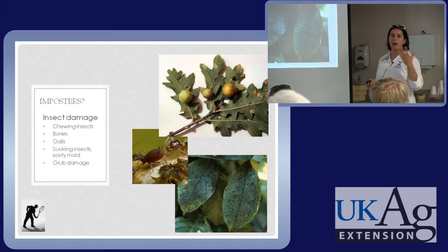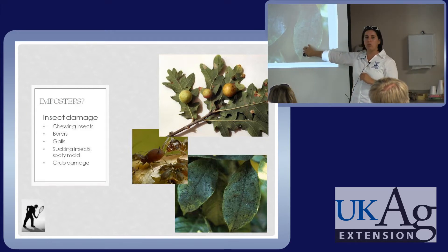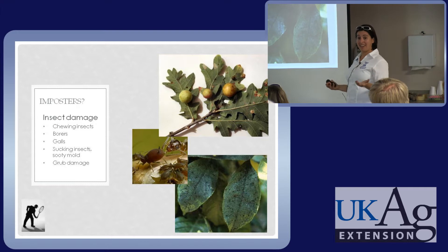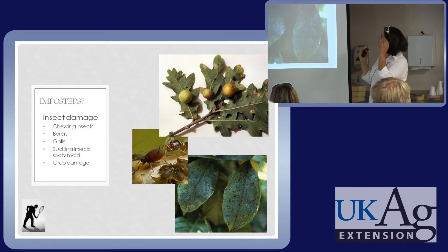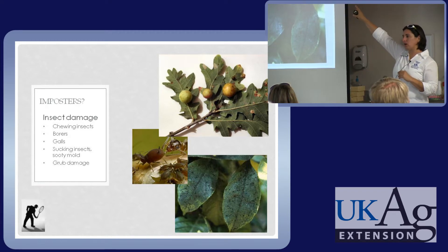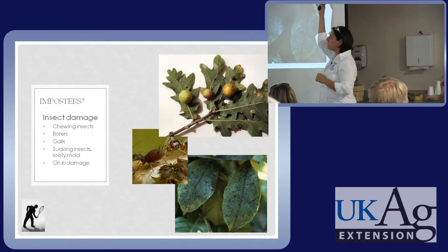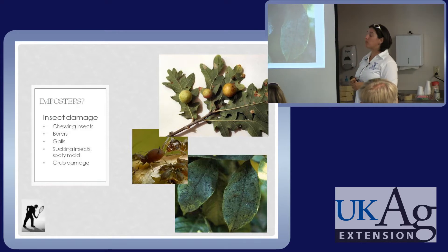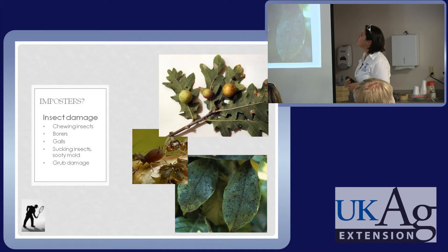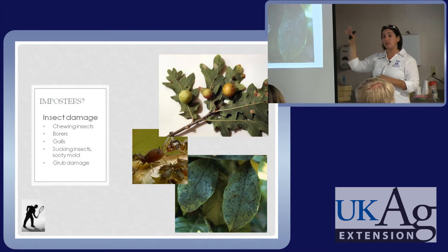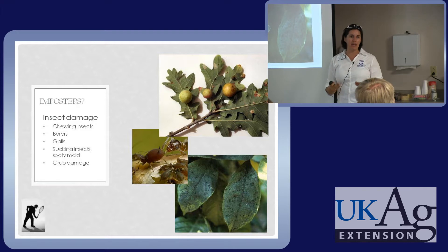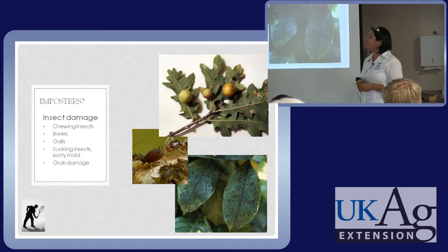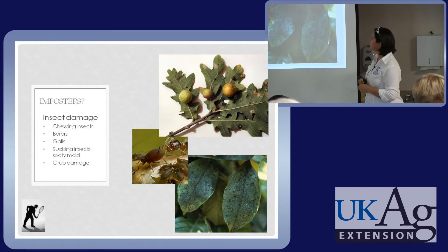Insect damage — you cannot imagine how much sooty mold we get with people thinking it's a disease, not realizing that aphids excrete honeydew which feeds that sooty mold fungus. Galls on oak also come in regularly — I got an email recently where someone described 'seeds growing on his leaves.' Knowing your insects and being able to trace back what's happening is critical: have you flipped those leaves over? Have you looked for insects, like thrips?